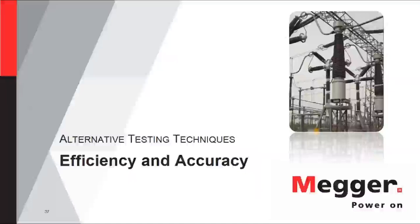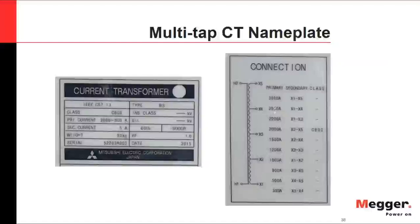Now let's discuss the alternative testing techniques. What we've covered so far is routine testing recommended by the standards. The question is how to become more efficient without affecting accuracy. One problem you may face in the field is that not all CTs have the same configuration. You may encounter a CT with two terminals on the primary side (H1, H2) but five terminals on the secondary side (X1 through X5), representing different current ratios.